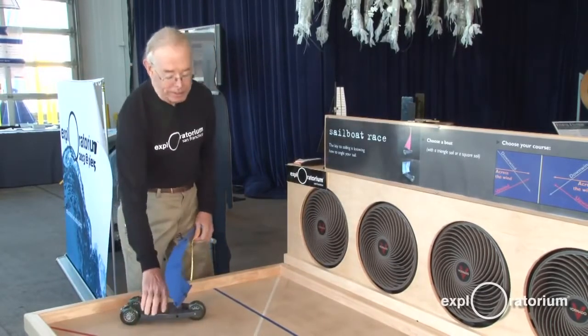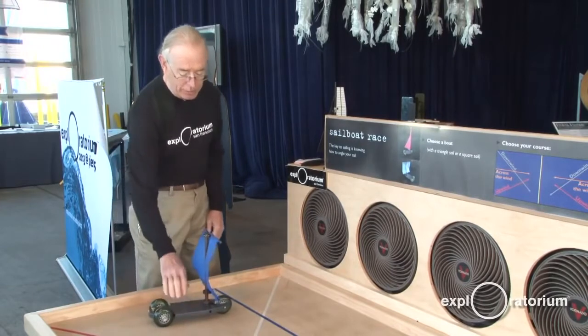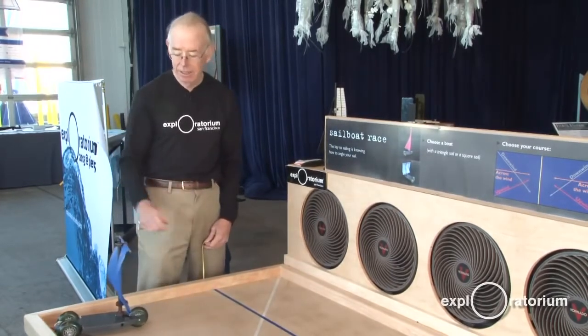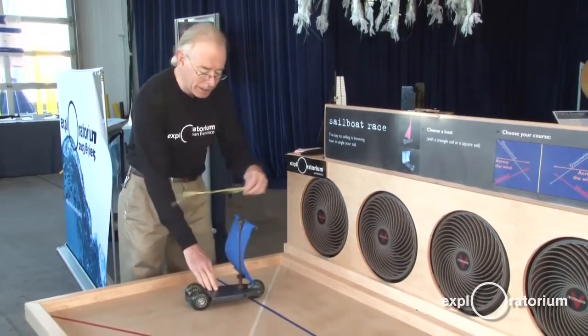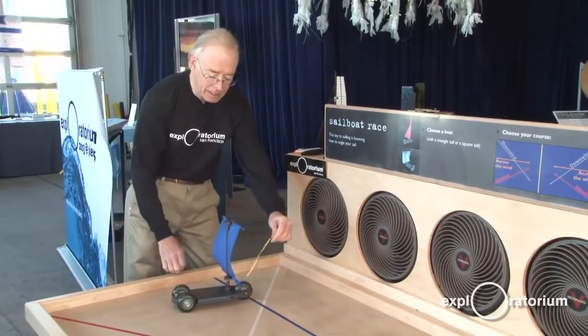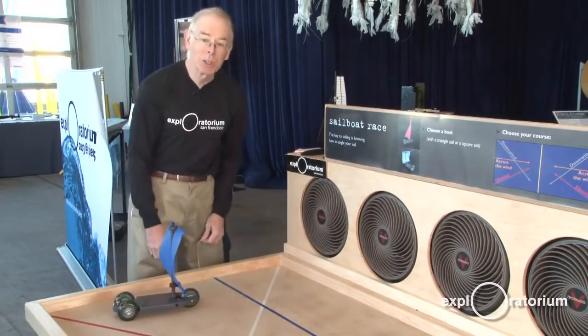This square-rigged sailboat, however, has great difficulty sailing close to the wind, into the wind. In fact, you can see that as it tries to do that, the sail is bulging the other way, indicating that the force pushes it backwards.